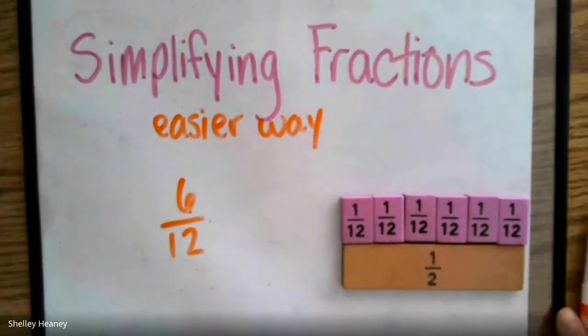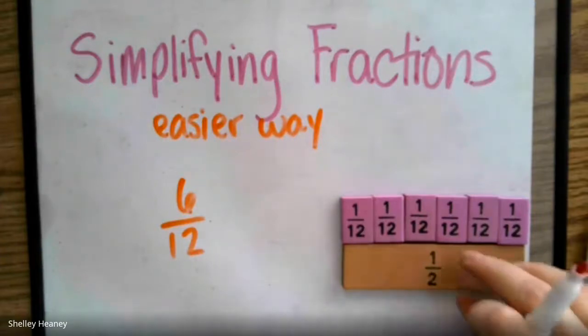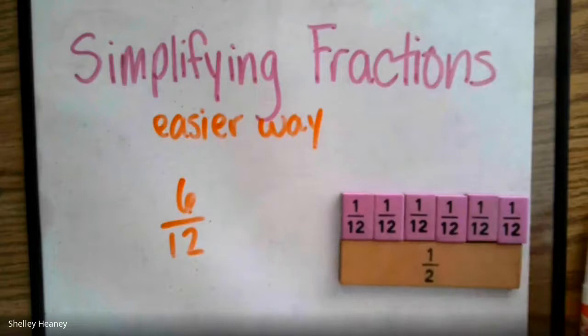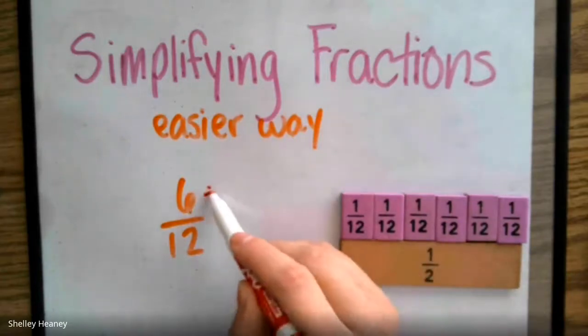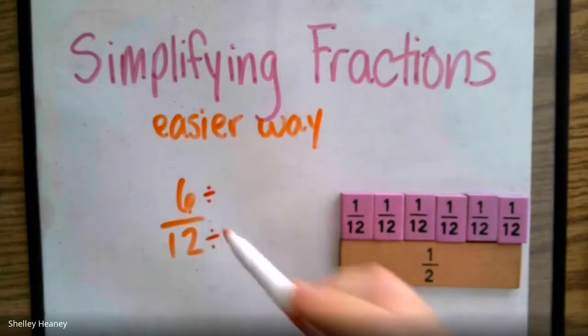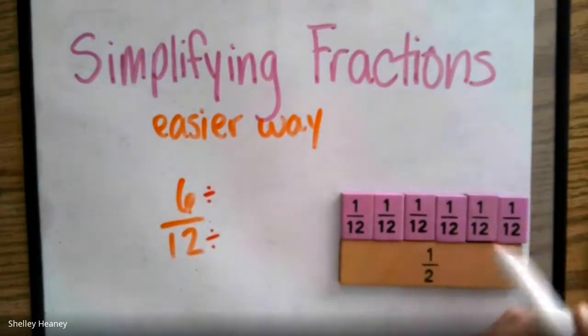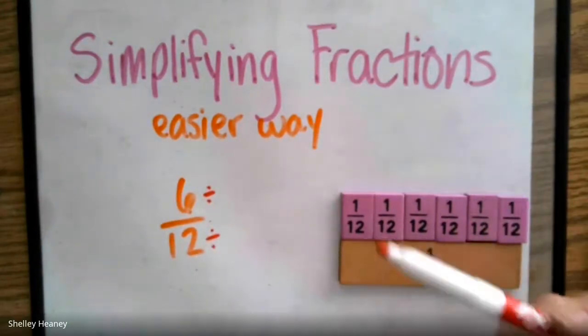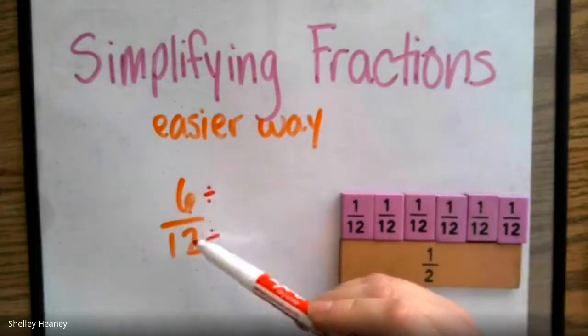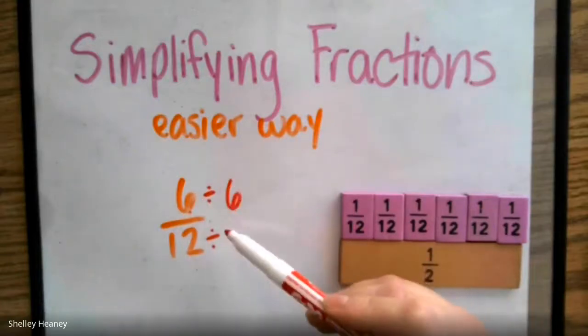When we're simplifying fractions, what we do is we divide the top and the bottom by the same number to make it smaller. So if I have 6 twelfths, what can I divide on the top and the bottom to make it smaller? This is where sometimes our GCF can come into play. I'm thinking of the biggest number I can divide on the top and the bottom, which I know is 6.